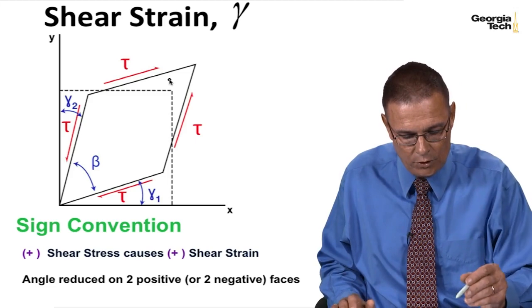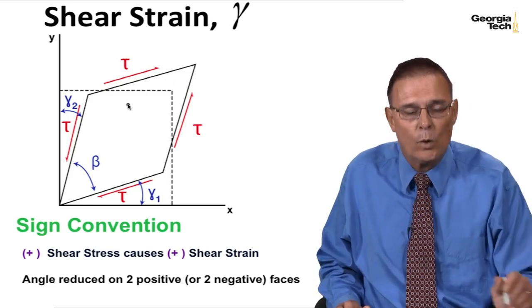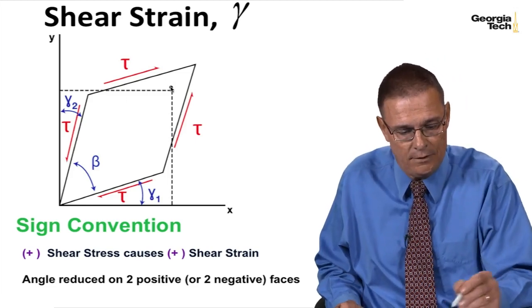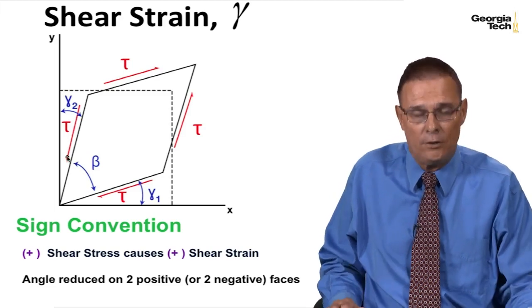where the angle is reduced on two positive or two negative faces. So here's the positive faces, here's the negative faces, and that angle is reduced.